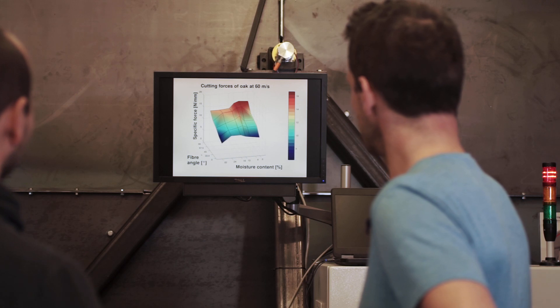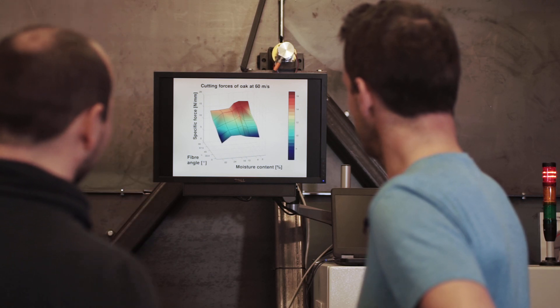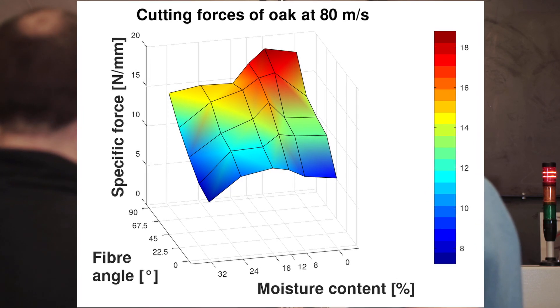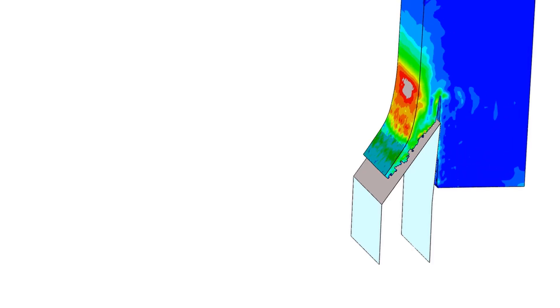Based on the knowledge gained, relationships between tool, process, and material parameters can be identified. This allows the simulation of cutting processes and the optimization of tool and process design.